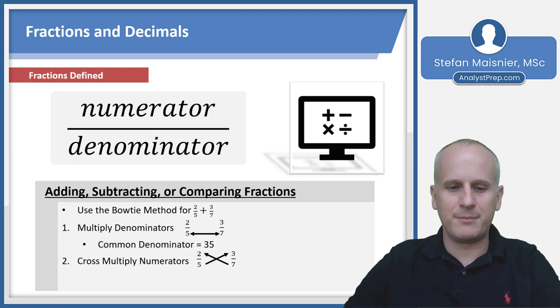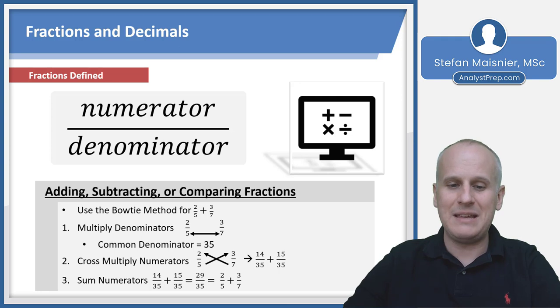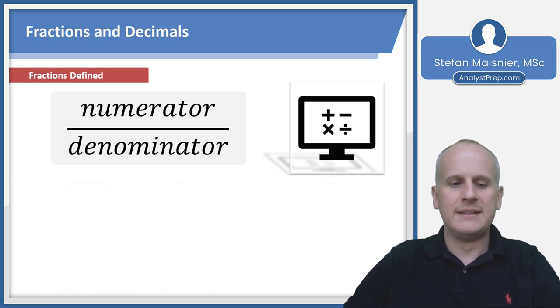Then cross multiply your numerators to get your new numerators for each equivalent fraction out of 35. We have 14 over 35 plus 15 over 35. Keep the denominator common and sum the numerators only. 14 plus 15 is 29 over 35, which equals two fifths plus three sevenths.